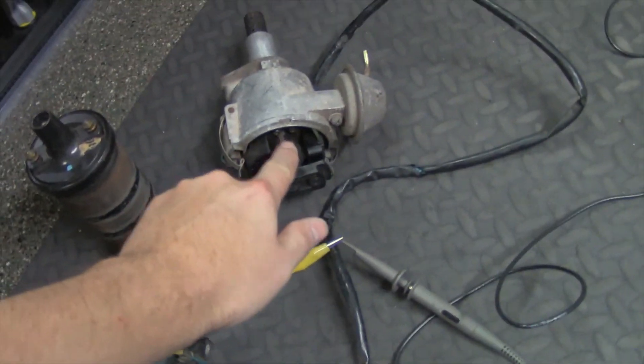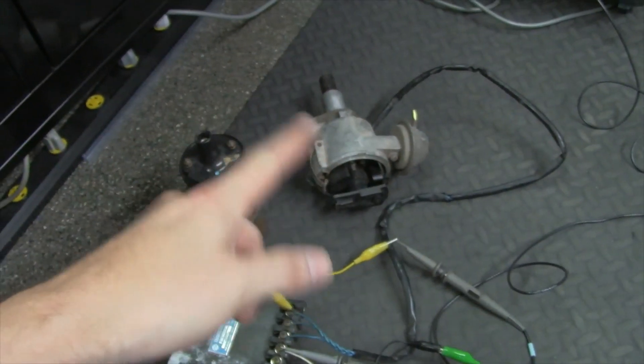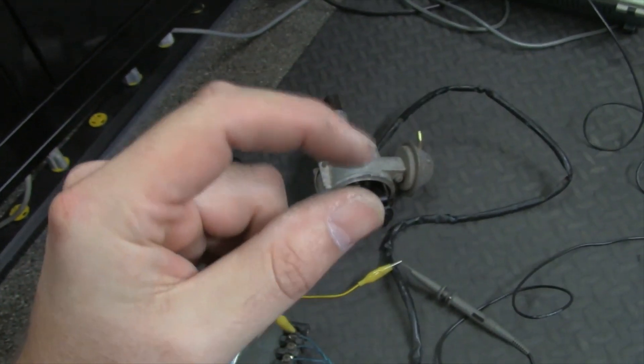Well, your points would actually sit down inside here, on a little cam. They actually rode on a little cam. As the shaft rotates, these contacts would open and close.